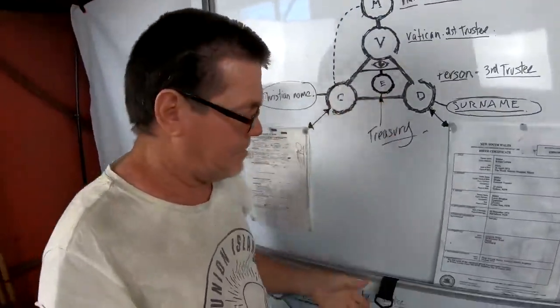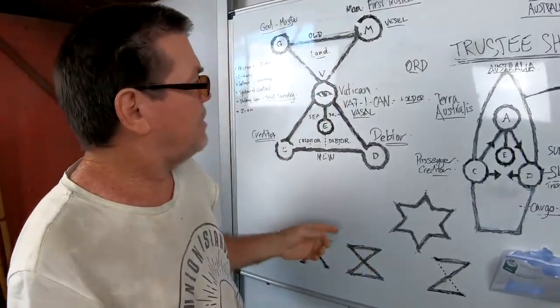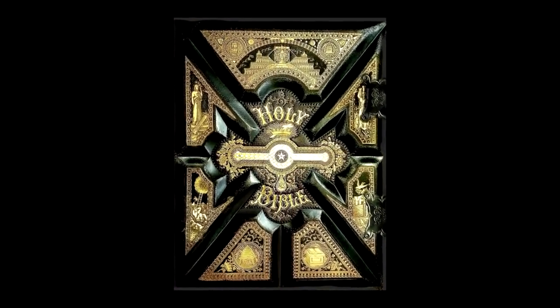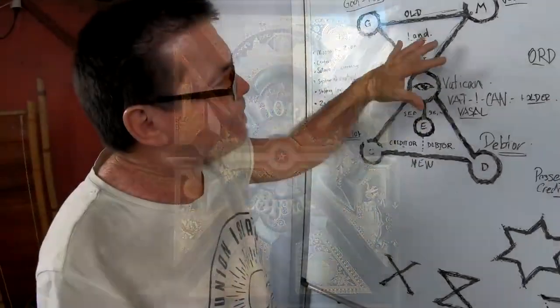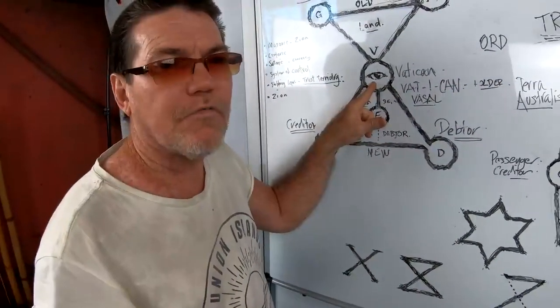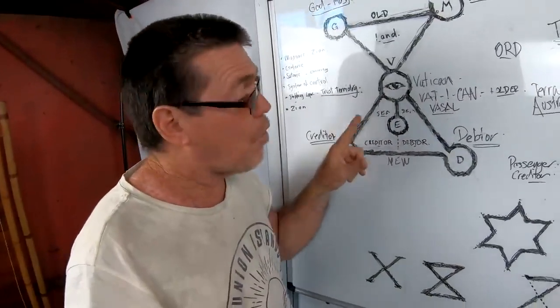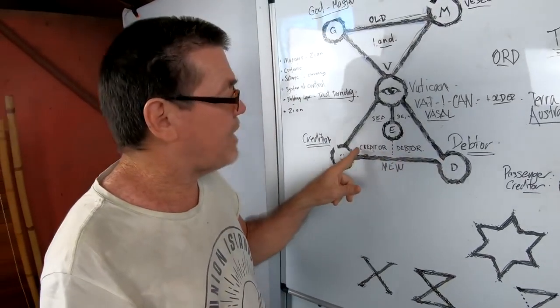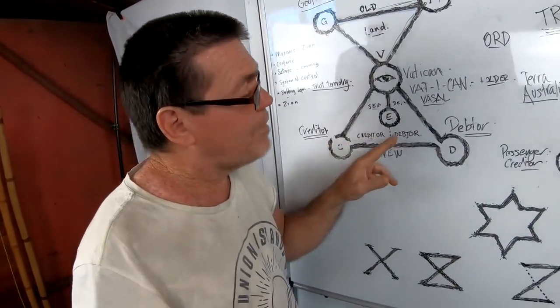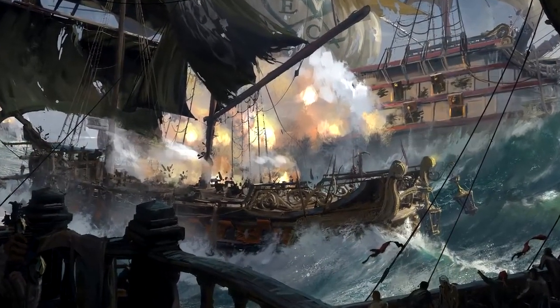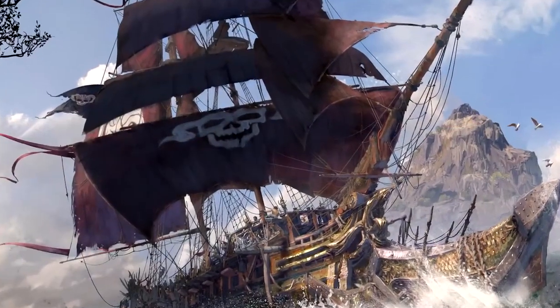These schematics — these plans — are what's found on old Masonic Bibles, and that's what this schematic is all about. Once you come into the world of the New Testament, which Christ is looking after, he offered you to stay as the creditor, or at the age of 21 you can find your way back to the creditor side. But if you remain on the debtor side you are like a crew member on the Vatican ship, and the Vatican has been handling the law of the sea for thousands of years.